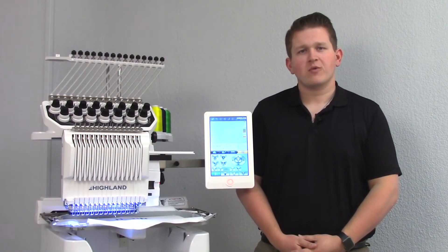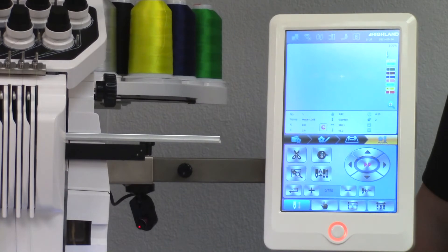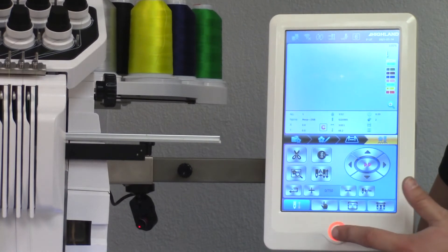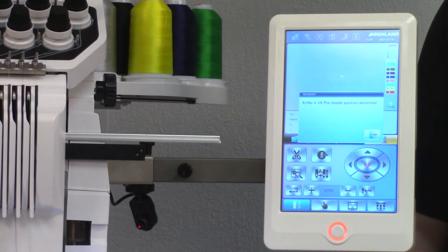The second error message that we'll cover is error number 19, which says our needle position is abnormal. If I were to begin sewing on this machine, I'll tap the start button and I'll see that error message pop up.